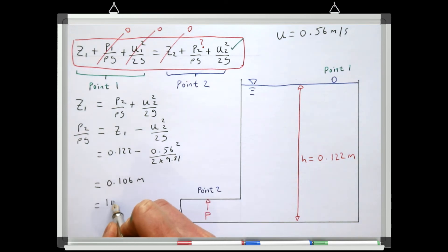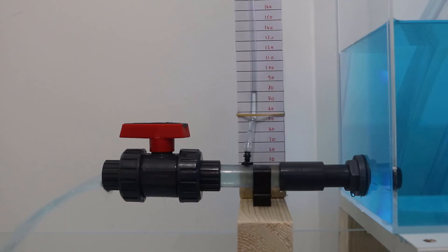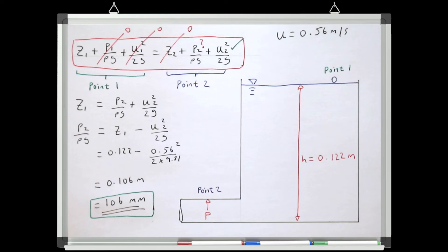This gives us a pressure head at point 2 of 106 millimetres. If we look at the gauge, we can see that the actual pressure head is only 80 millimetres. So our calculation has given us a reasonable ballpark estimate of the pressure. However, it's clear that the actual pressure is lower than the predicted pressure — similar to how in the last video the predicted discharge was higher than the actual measured discharge. Have a think about why the pressure predicted assuming conservation of energy might be more than the actual pressure, and we'll cover this fully in Lessons 3 and 4.